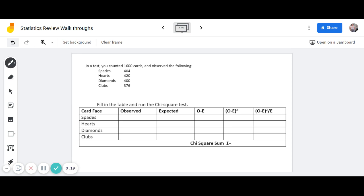So we are going to go ahead and fill those in in our observed category. So we had 404 spades, 420 hearts, 400 diamonds, and 376 clubs. And those should all equal up to 1,600, right? Because we counted 1,600 cards.